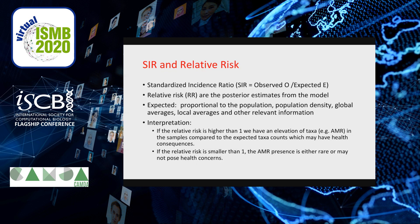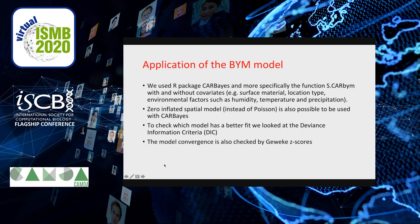We can interpret the relative risk by setting up a threshold of one: above the value of one, there is an elevation of taxa or antimicrobial resistance which may have health consequences; below one, the values are rare and do not pose any health concerns.